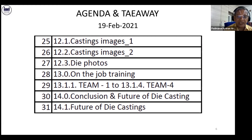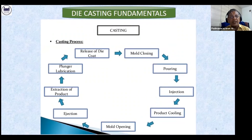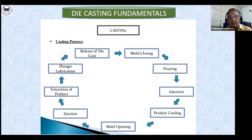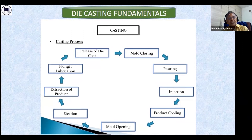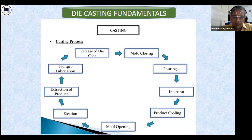Then I will discuss what is the future for die casting. First, here is a typical casting cycle: the mold closes, then pouring takes place — manually or through automation — then injection, the part is cooled, the mold gets opened, castings are ejected, and then the casting is taken out from the die through an extractor robot. Then the plunger is lubricated and gets ready for the next cycle. The die gets cooled and is ready for the next shot. This cycle repeats each and every time.